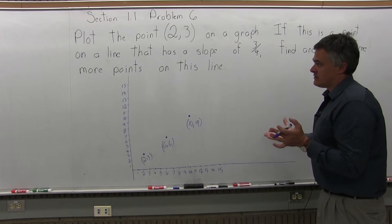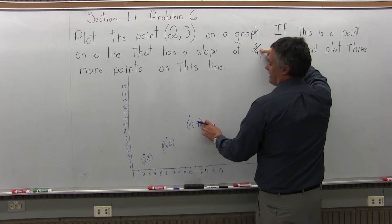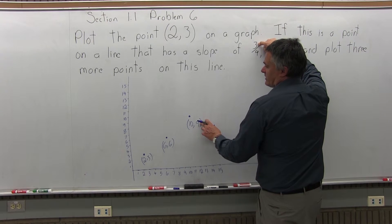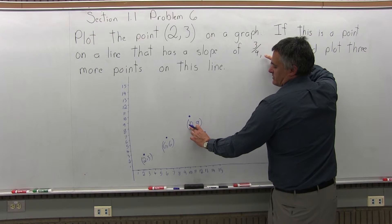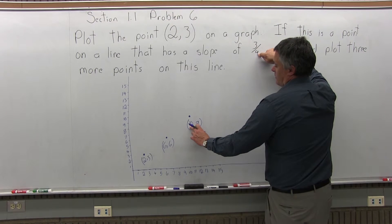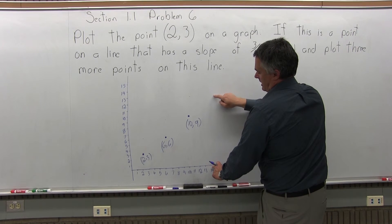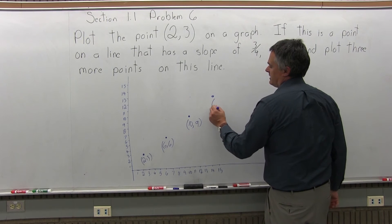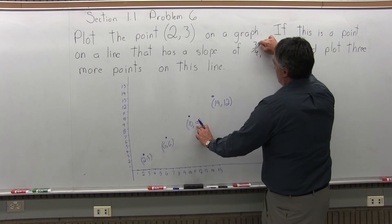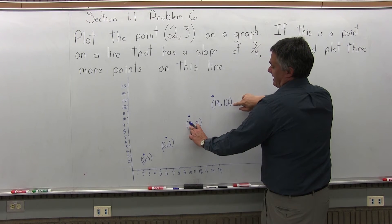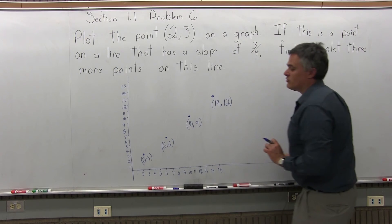Finally, one more point — the question asks for 3 total. From (10, 9), use the slope of 3 fourths again: go up 3 from height 9, reaching a height of 12. The x-coordinate 10 plus the denominator 4 gives 14. So going over 14 and up 12 gives the final point (14, 12). For a freehand graph, they appear reasonably in line.